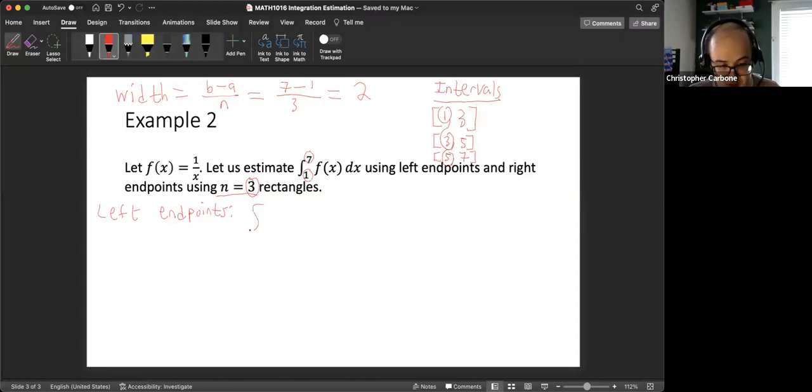So this integral from 1 to 7 of f(x) dx. This is going to be our width of 2 times the value of the function at 1 plus the value of the function at 3, plus the value of the function at 5. Again, those values from the left of each of these intervals. Popping that into the function that I gave. So this would be 2 times, you put 1 into f(x) here, that's 1 divided by 1, plus putting 3 into the function, this is 1 divided by 3, plus putting 5 into this function. You get 1 divided by 5.